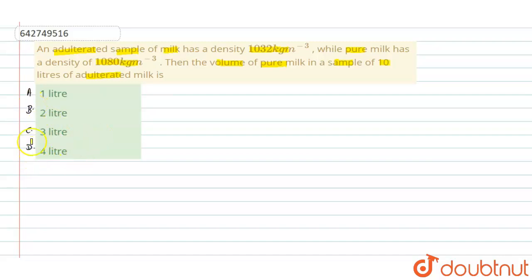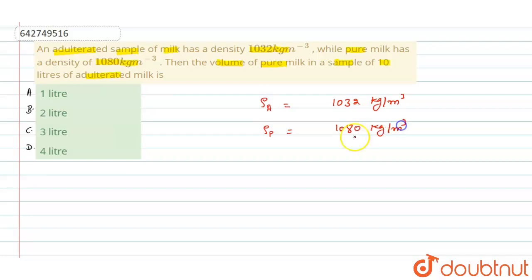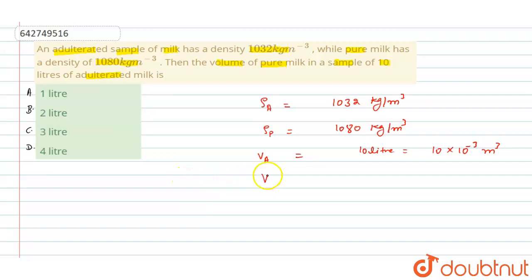We need to find which option is correct. Given: density of adulterated milk = 1032 kg/m³, density of pure milk ρ_p = 1080 kg/m³, and volume of adulterated milk = 10 liters. We know 1 liter = 10⁻³ m³, so 10 liters = 10 × 10⁻³ m³. We need to calculate the volume of pure milk, V_p.